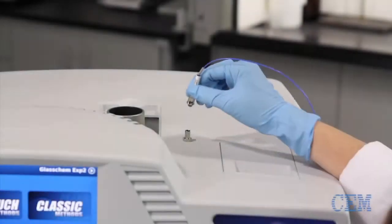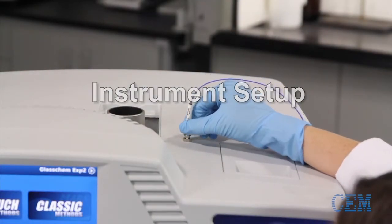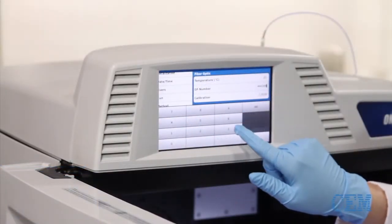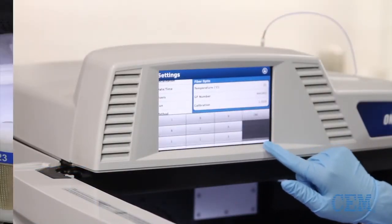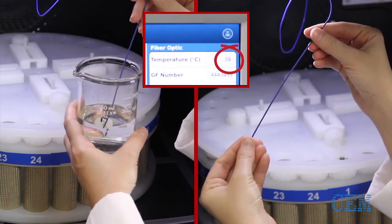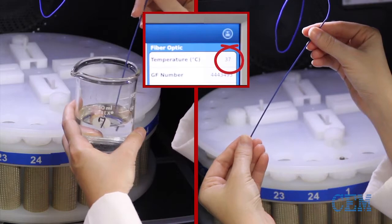To set up the MARS-6 for operation, connect the fiber optic probe and enter the correct GF number. Then, confirm that the probe is responding properly by warming it with your fingers or with warm water.